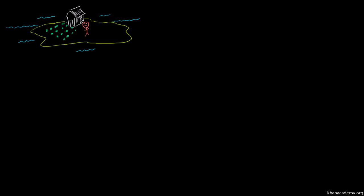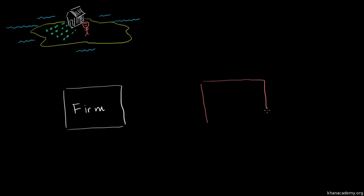Let's say there's a country made up only of an island sitting in the middle of a lake. On that island, there's only one person. He has one house and some land on which crops can be grown. But he wants to think more formally about his economy and starts setting up institutions that resemble things we'd see in more complex economies.